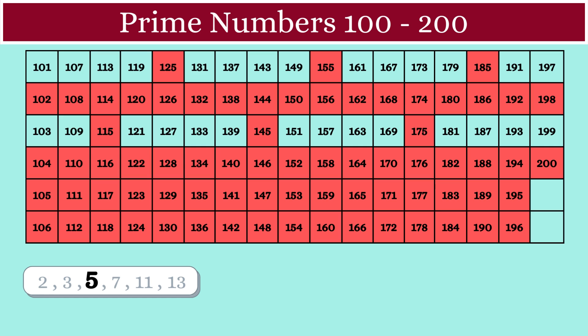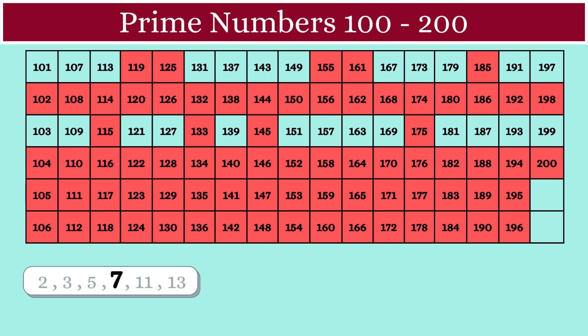In a similar manner, the multiples of 7 are arranged like this. We will mark these numbers also as composite numbers.